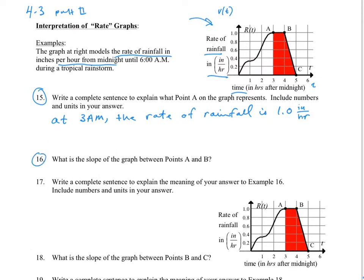Number 16, what is the slope of the graph between A and B? The slope you can see is zero. What does that mean? The slope is zero. What does that mean for us?